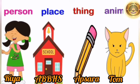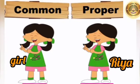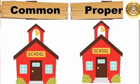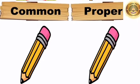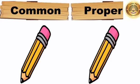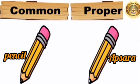Now I am going to show you some pictures. You can tell me common noun and proper noun. In this picture, she is a girl and her name is Ria. So girl is a common noun and Ria is a proper noun. This is a school and the name of the school is Advocate Bapu Sahib Bonde High School. School is a common noun and Advocate Bapu Sahib Bonde High School is a proper noun. This is a pencil, but this is an Apsara pencil. So pencil is a common noun and Apsara pencil is a proper noun.